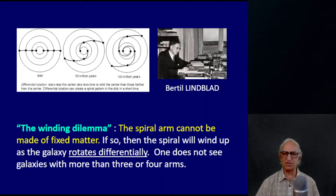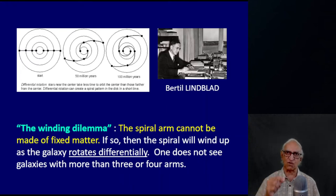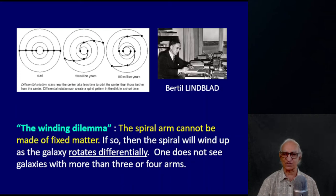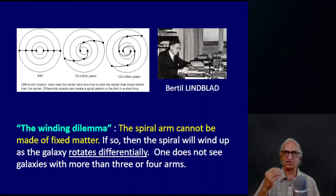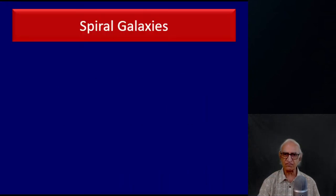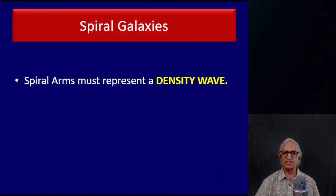Why is this a dilemma? Because we do not see galaxies with more than three or four arms, and yet over its lifetime the galaxy would have rotated many, many times — so we would expect the spiral to have wound up like the spring of old-fashioned clocks. Bertil Lindblad concluded that whatever is tracing the spirals cannot be the same stars or the same gas clouds. He concluded that the spiral arms must represent some sort of a density wave.